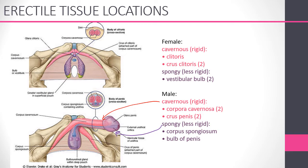The female has cavernous and spongy tissues as well. The cavernous tissues are the crura of the clitoris, which spread out on either side of the labia far to the side. The spongy tissues are the glans of the clitoris and the vestibular bulbs, which swell up.